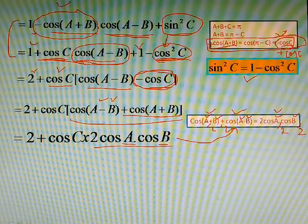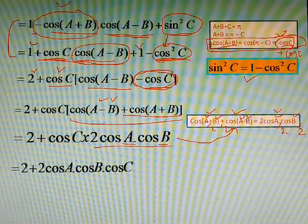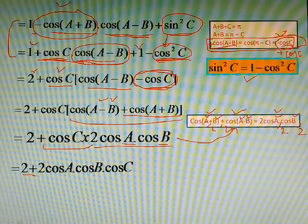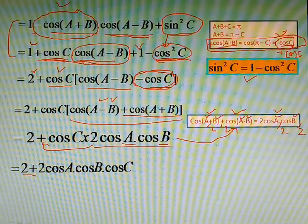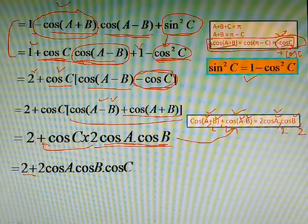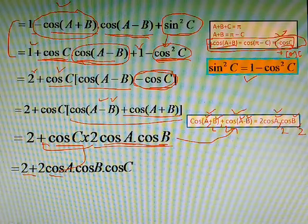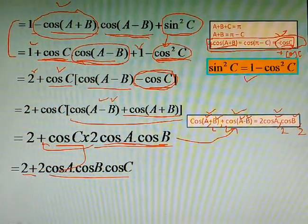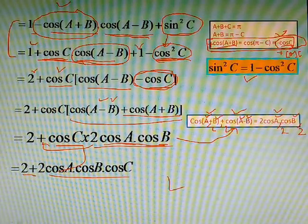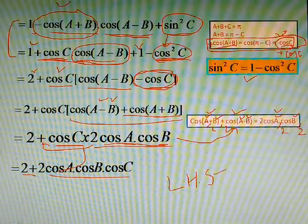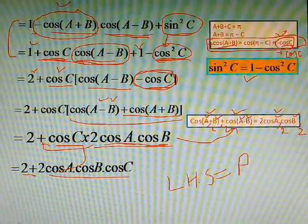Now you are close to the answer. After this step, the 2 is written and what remains is cosA·cosB·cosC, all copied from above. So this is exactly what we needed to prove in this question, and we get left hand side equals right hand side.